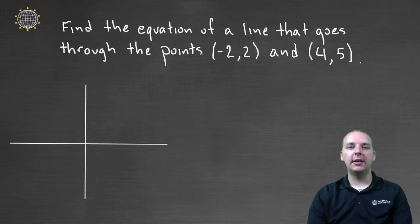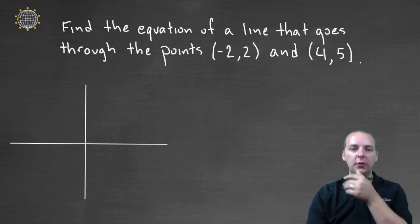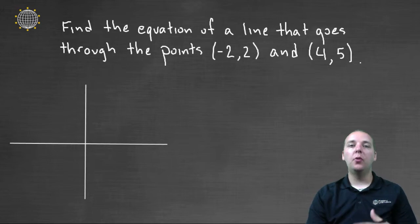Here's a very popular exercise dealing with the equation of a line. It says find the equation of a line that goes through the points negative two, two, and the point four, five.